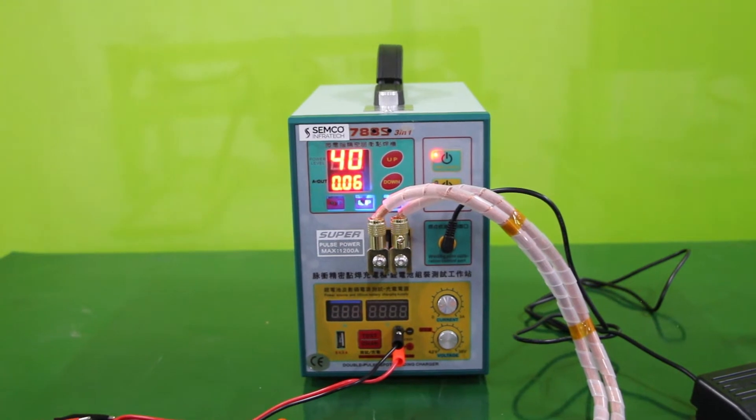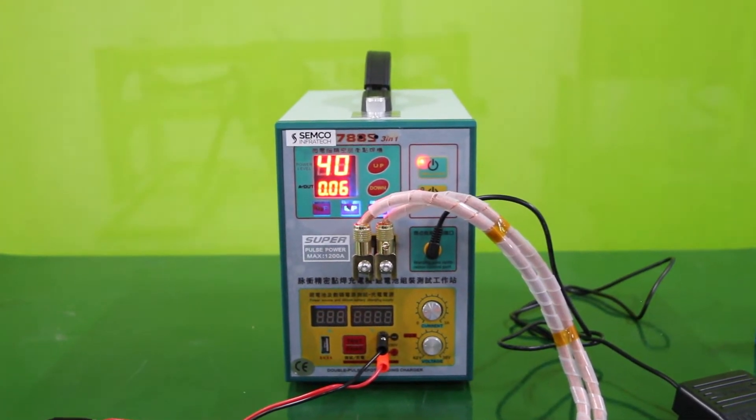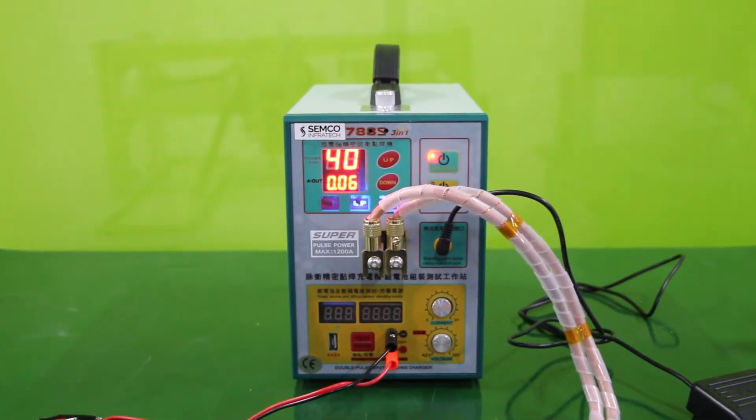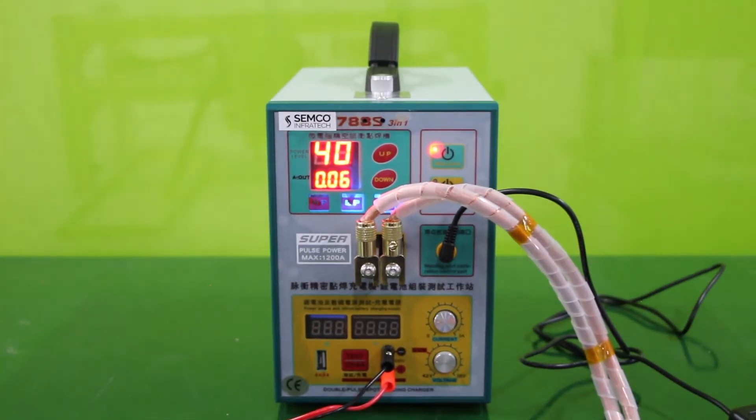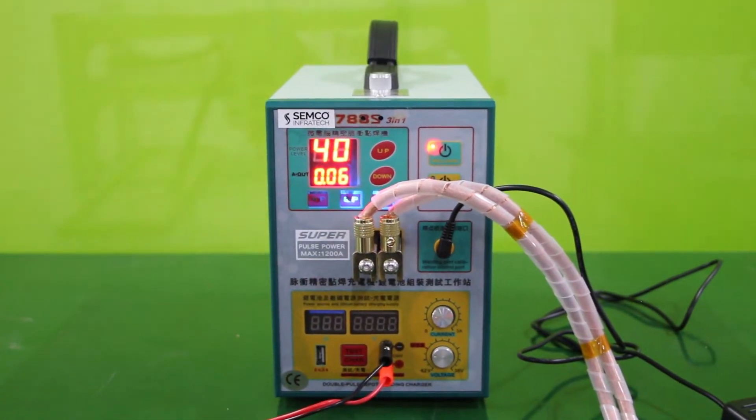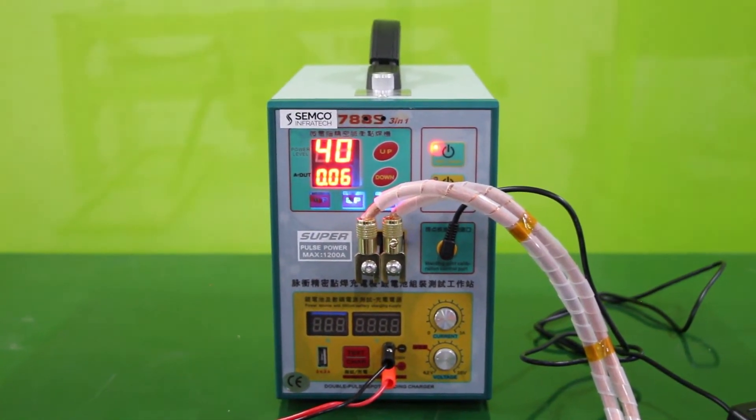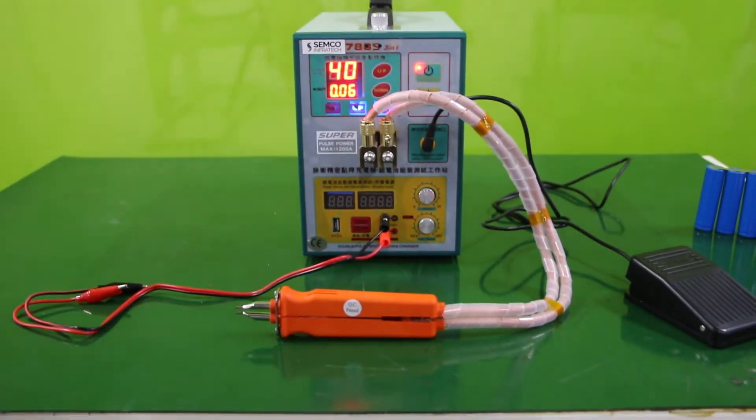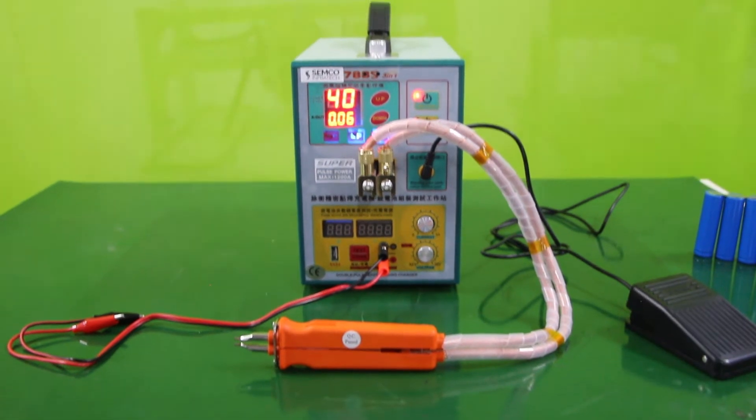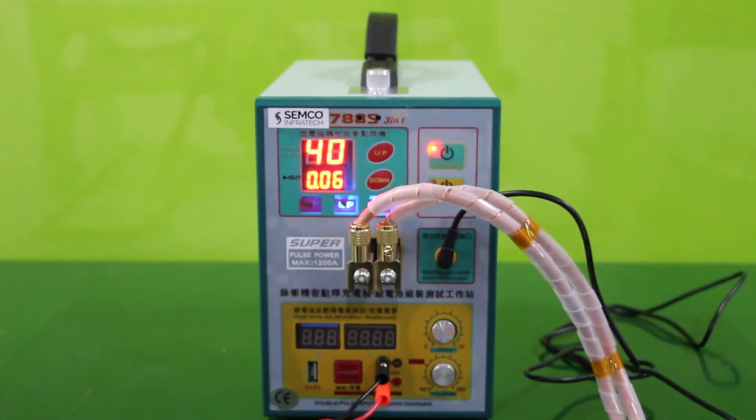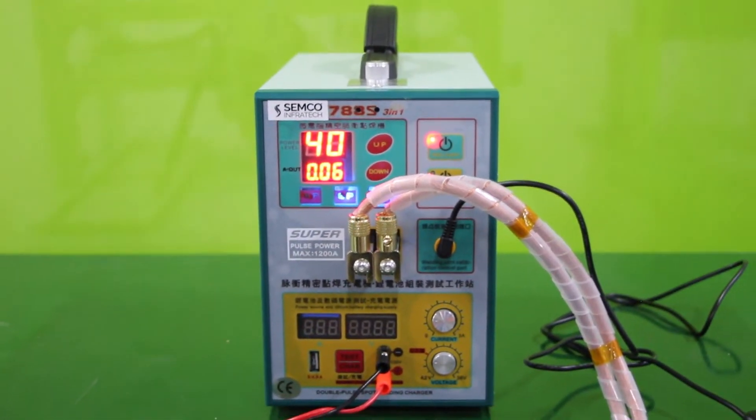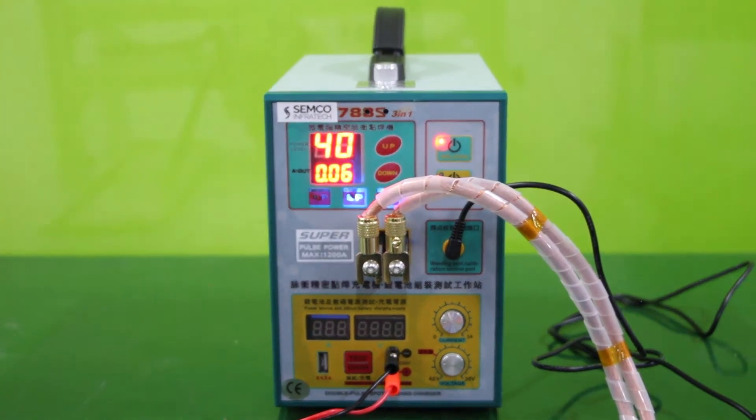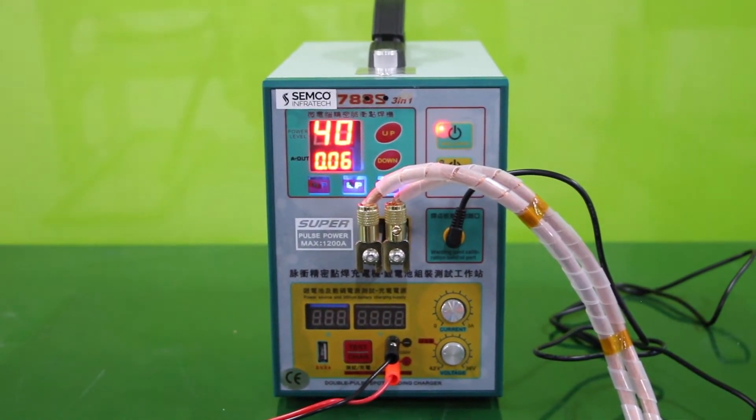This 788S Pro spot welder is controlled by microchip with two functions: precision welding and charging. The movable welding pan can weld big size battery packs. It is the first machine with three functions in one spot welder: precise welding, hand welding, movable welding, and lithium battery charging testing. Microchip control provides more than 99% precision in welding parameters.